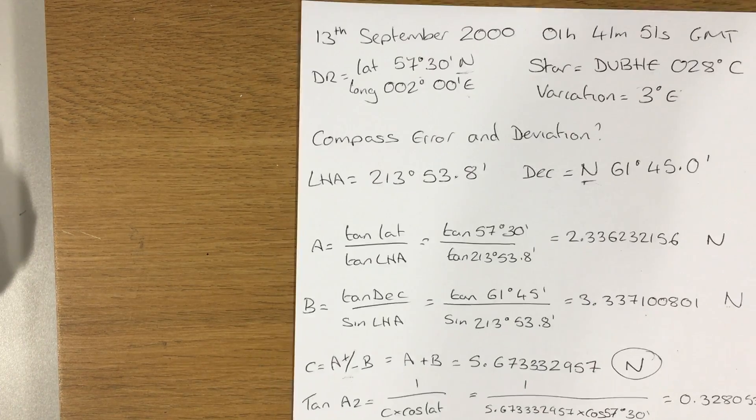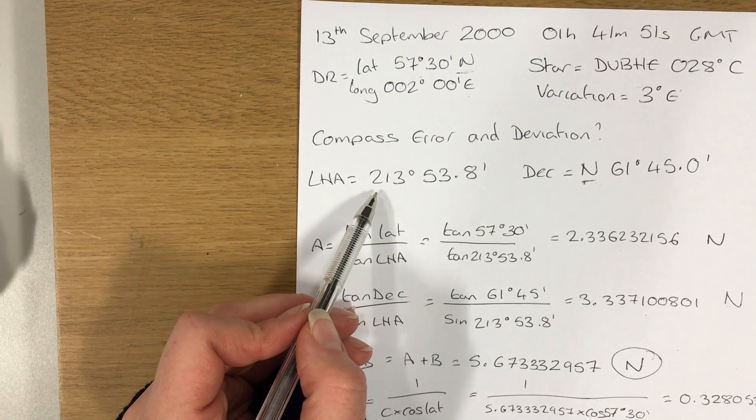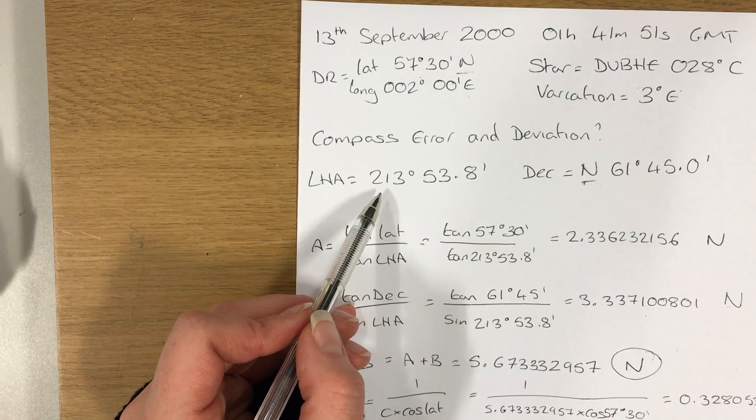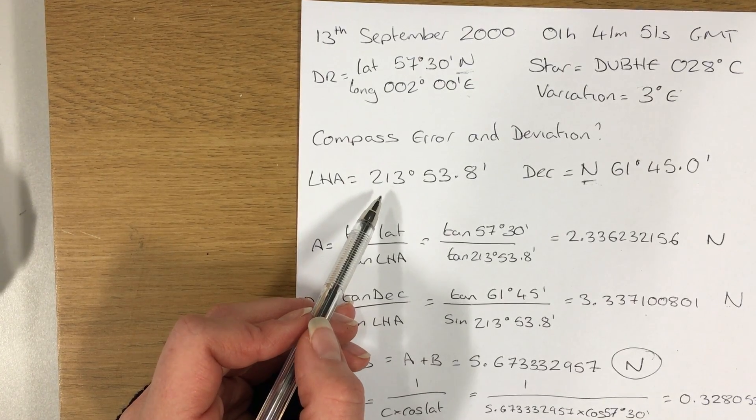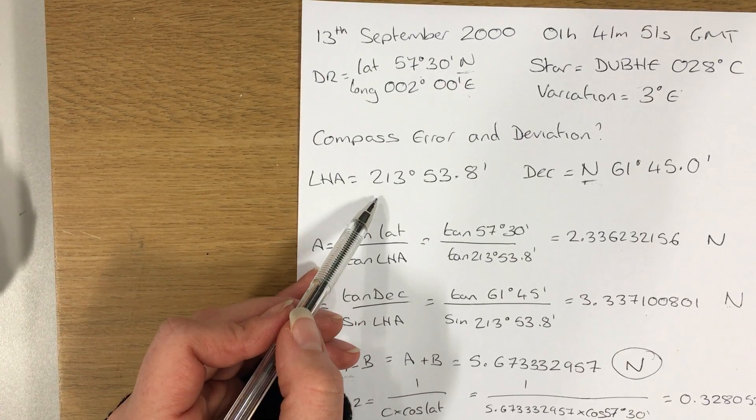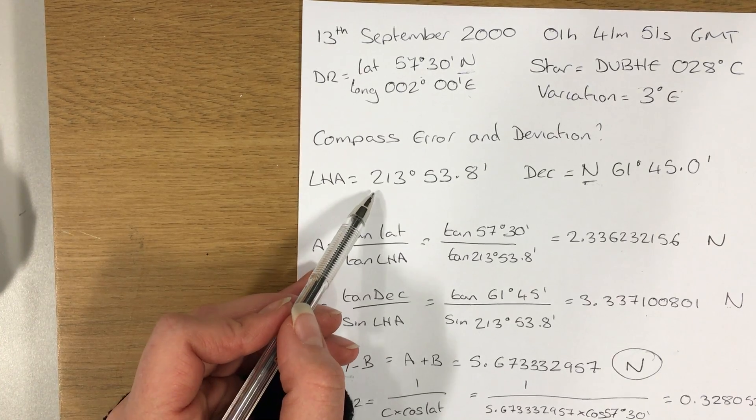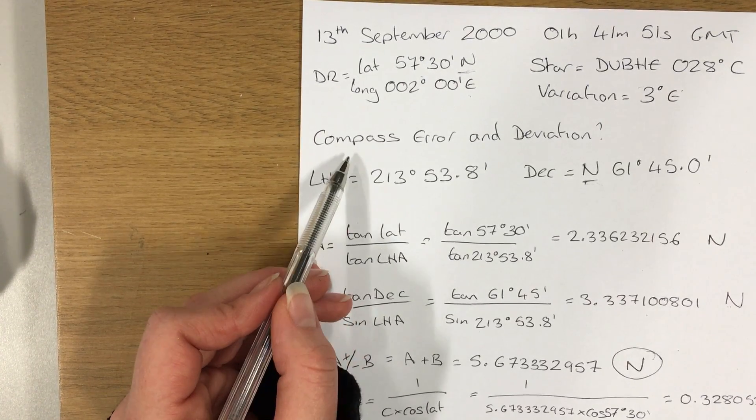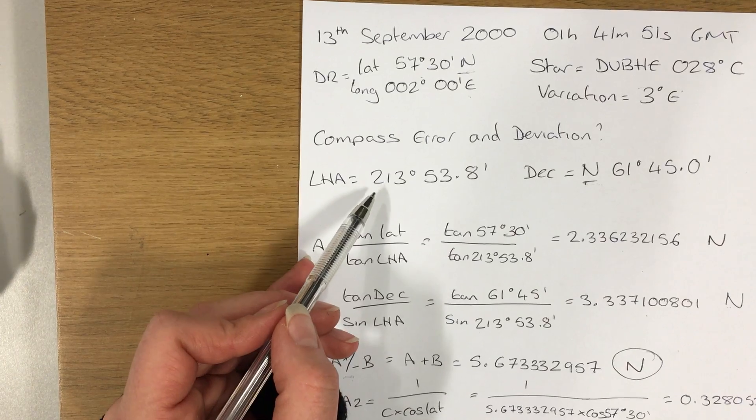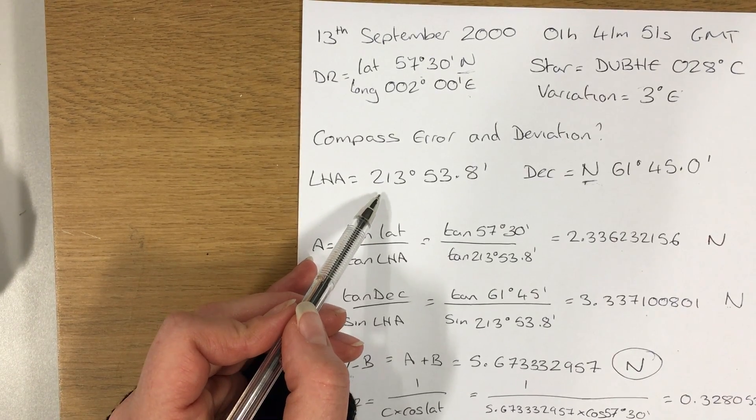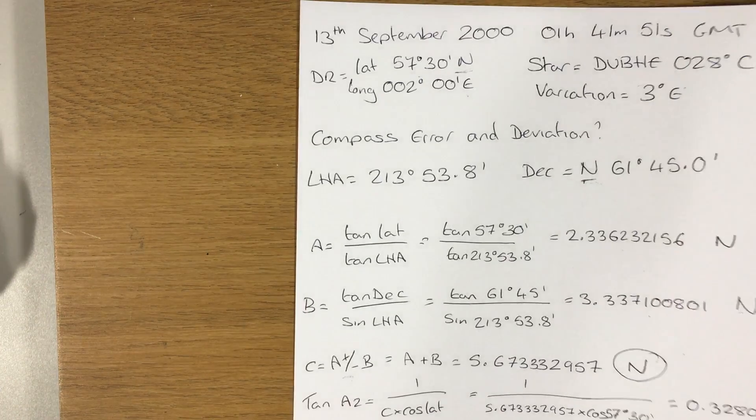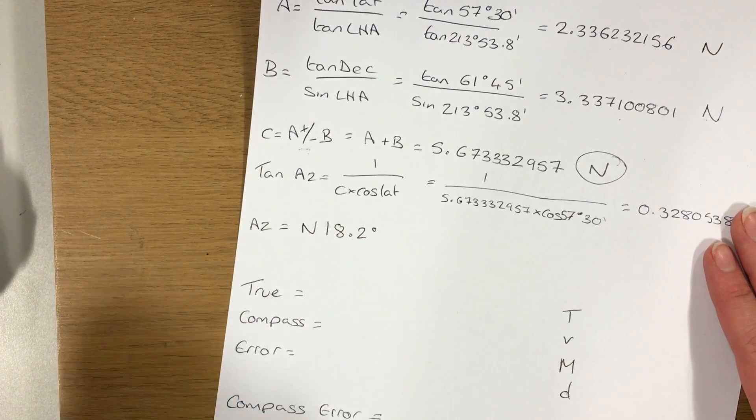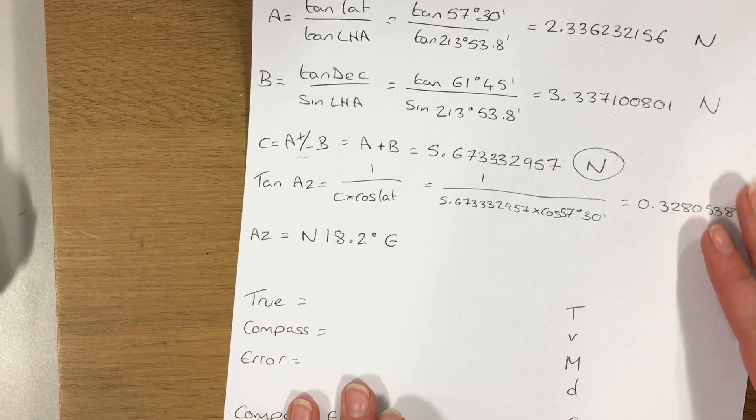Then, east or west, depending on the value of my LHA. If LHA is between 0 and 180 degrees, my azimuth will be named west. If my LHA is between 180 degrees and 360 degrees, my azimuth will be named east. So in this case, my azimuth will take the name of east.